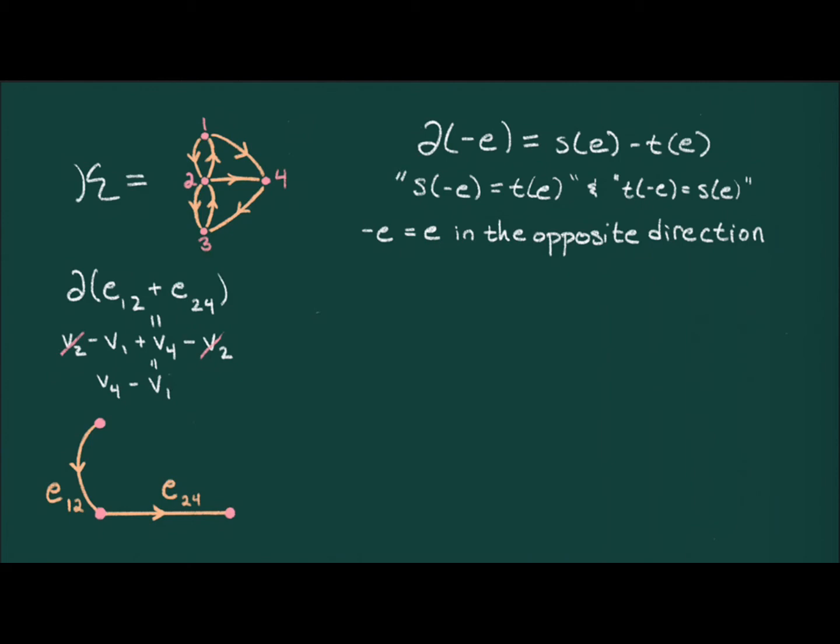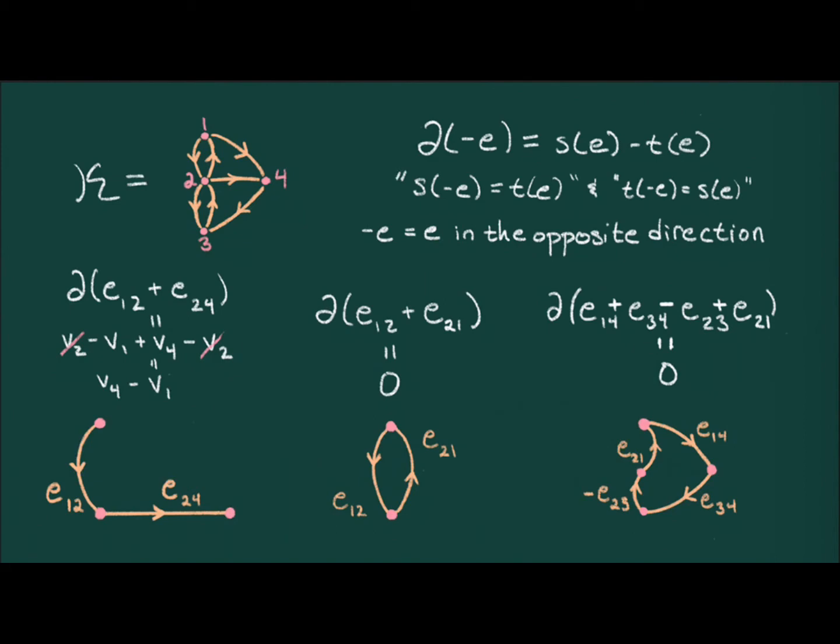Next, note that e₁₂ ends where e₂₁ begins, and vice versa; similar cancellations occur when computing the boundary of their sum. Therefore, e₁₂ plus e₂₁ is a cycle, both in the formal and informal sense. This is the motivation behind the term cycle. Finally, as an exercise, prove the following equation, and try to figure out why this isn't a ridiculous illustration of that expression.